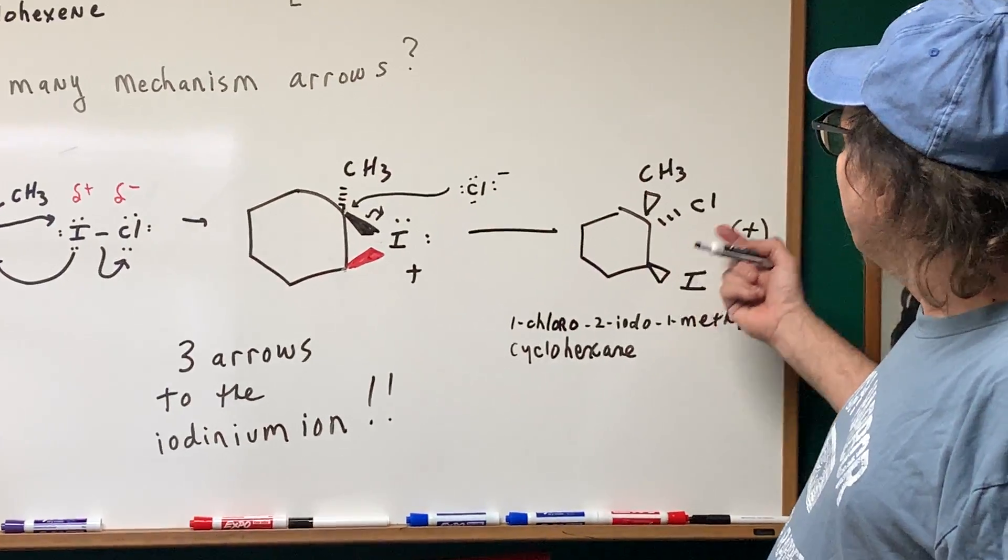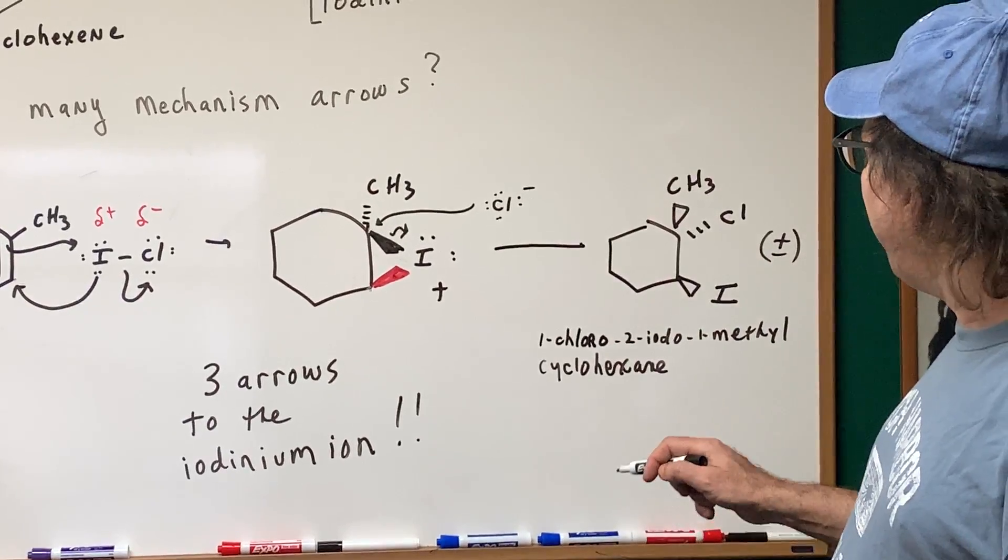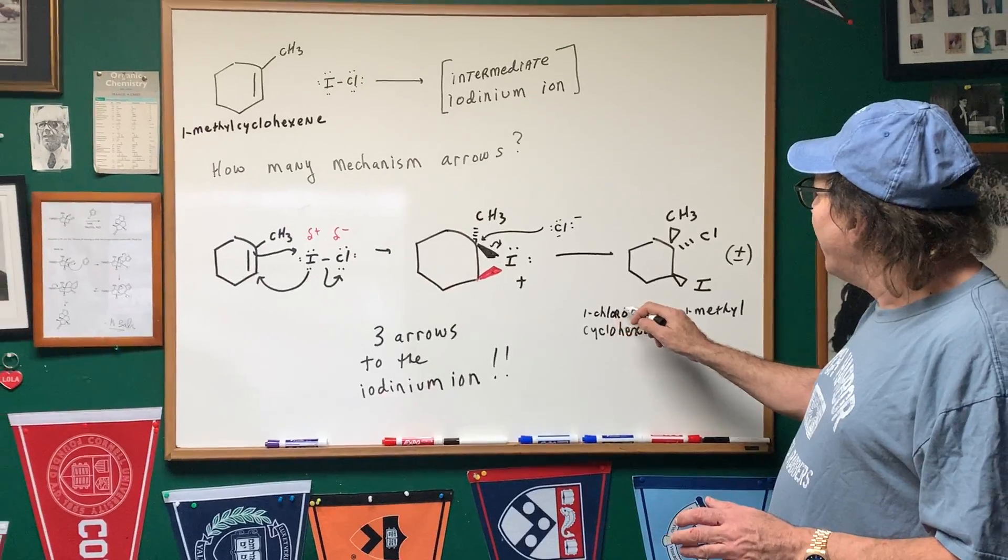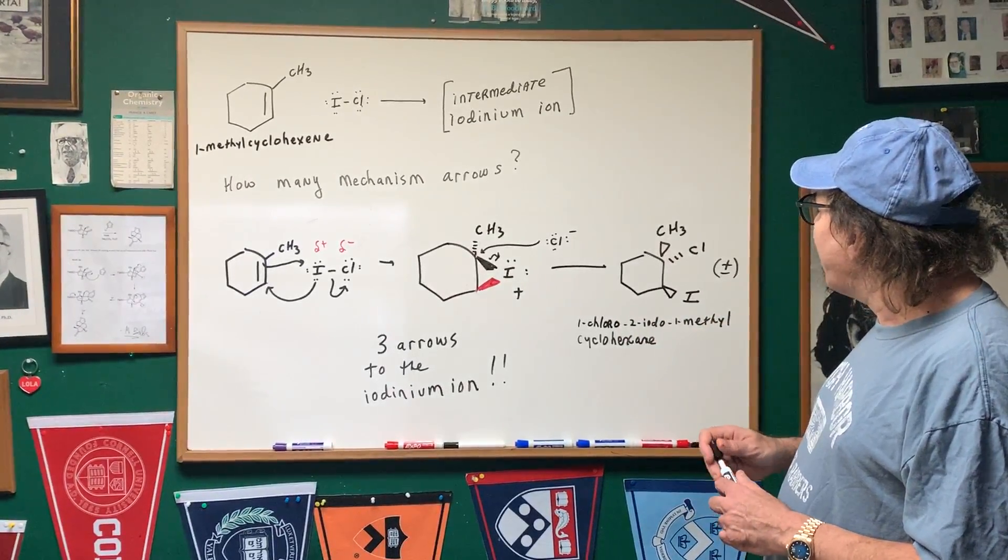And, of course, you could have also got the enantiomer of that. And if we look here, without putting any stereochemistry designator on it, we would just simply call this one chloro, two iodo, one methyl cyclohexane.